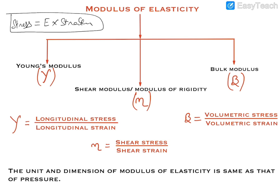Young's modulus is the ratio of longitudinal stress and longitudinal strain, or we can say that when the length of a solid changes, the stress-to-strain ratio is called Young's modulus. The second is shear modulus, which is the ratio of shear stress to shear strain.